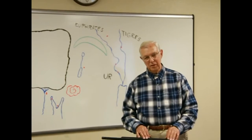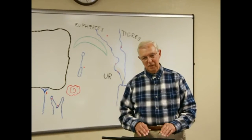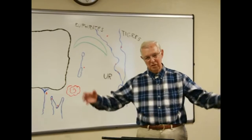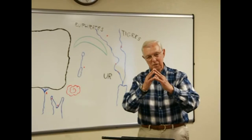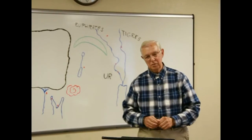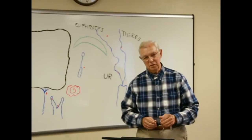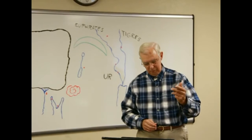In Genesis we find four events and four figures. The first eleven chapters is creation, the fall, the flood, and the Tower of Babel, Genesis 1 to 11. Genesis 12 through 50 is four personages: Abraham, Isaac, Jacob, and Joseph.